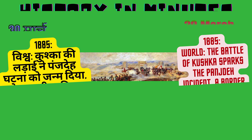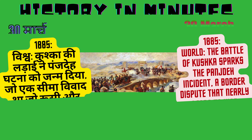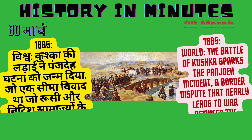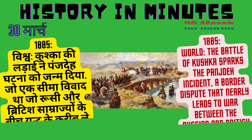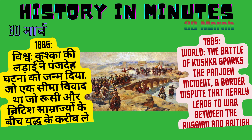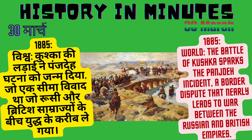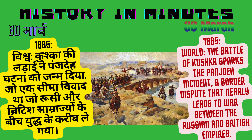1885: World — The Battle of Kushka sparks the Panjdeh incident, a border dispute that nearly leads to war between the Russian and British empires. (Hindi: Vishwa Kushka ki ladai ne Panjdeh ghatna ko janm diya, jo ek seema vivaad tha jo Rusi aur British samrajyon ke beech yuddh ke kareeb le gaya.)